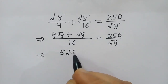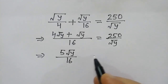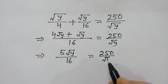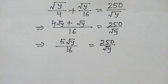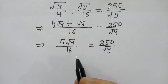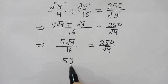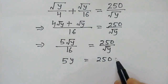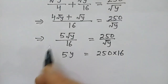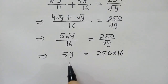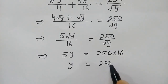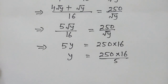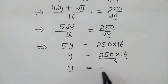So 5 square root of y over 16 is equal to 250 over square root of y. If we cross multiply, we get 5y is equal to 250 times 16. Therefore y is equal to 250 times 16 over 5, which gives y is equal to 800.